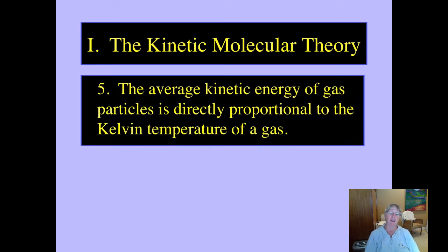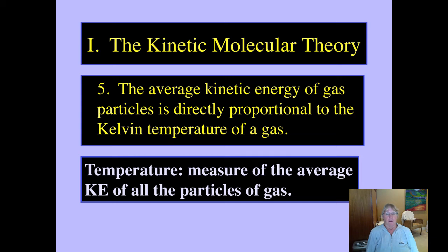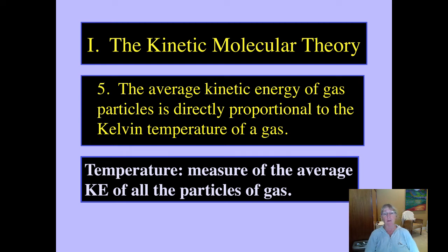The average kinetic energy of a gas particle is directly proportional to its Kelvin temperature. This means that measuring the average kinetic energy — the energy of motion — of all the particles in a gas is our official definition of temperature. It's measured by sticking in a calibrated thermometer. The hotter it is, the faster those particles are moving; the colder it is, the more sluggish they become.